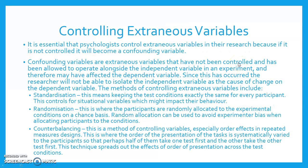It is essential that psychologists control extraneous variables in their research because if they are not controlled, they will become confounding variables. Confounding variables are extraneous variables that have not been controlled and have been allowed to operate alongside the independent variable in an experiment, and therefore may have affected the dependent variable. Since this has occurred, the researcher will not be able to isolate the independent variable as the cause of change on the dependent variable.